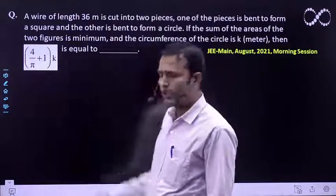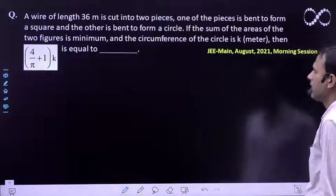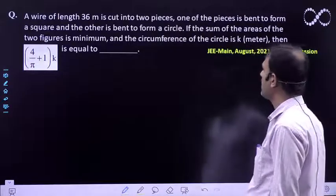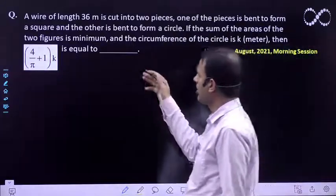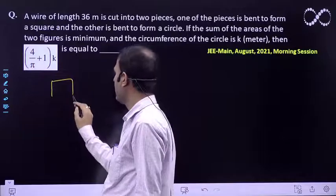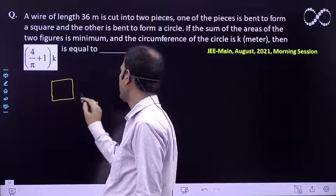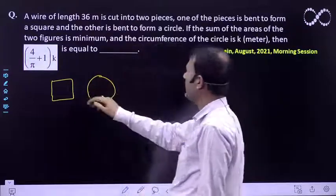Hello students, let's see what we need to find in this question. A wire of length 36 meters is cut into two pieces. One of the pieces is bent to form a square and the other is bent to form a circle.